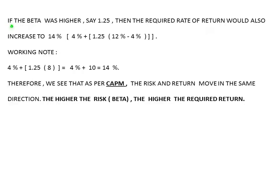Now suppose the beta was higher, say 1.25. The required rate of return would be: RS = 4% + 1.25 × (12% − 4%) = 4% + 1.25 × 8 = 4% + 10% = 14%. With an increase in beta, the required rate of return also increases to 14%. As per CAPM, risk and return move in the same direction: the higher the risk, the higher the required rate of return; the lower the risk, the lower the required rate of return. Thank you for watching.